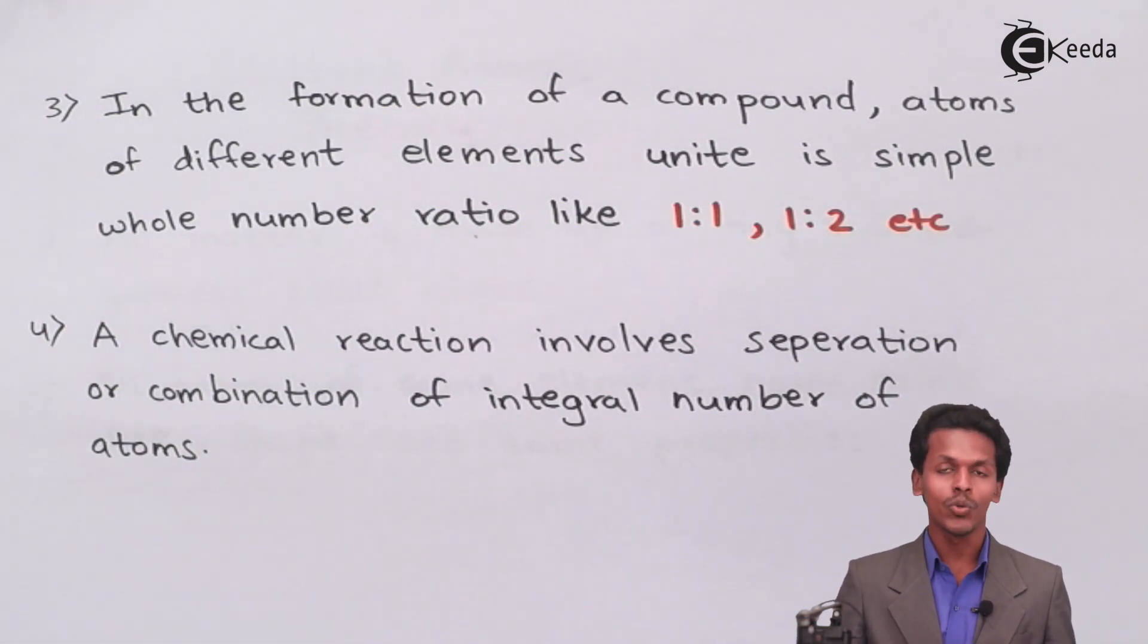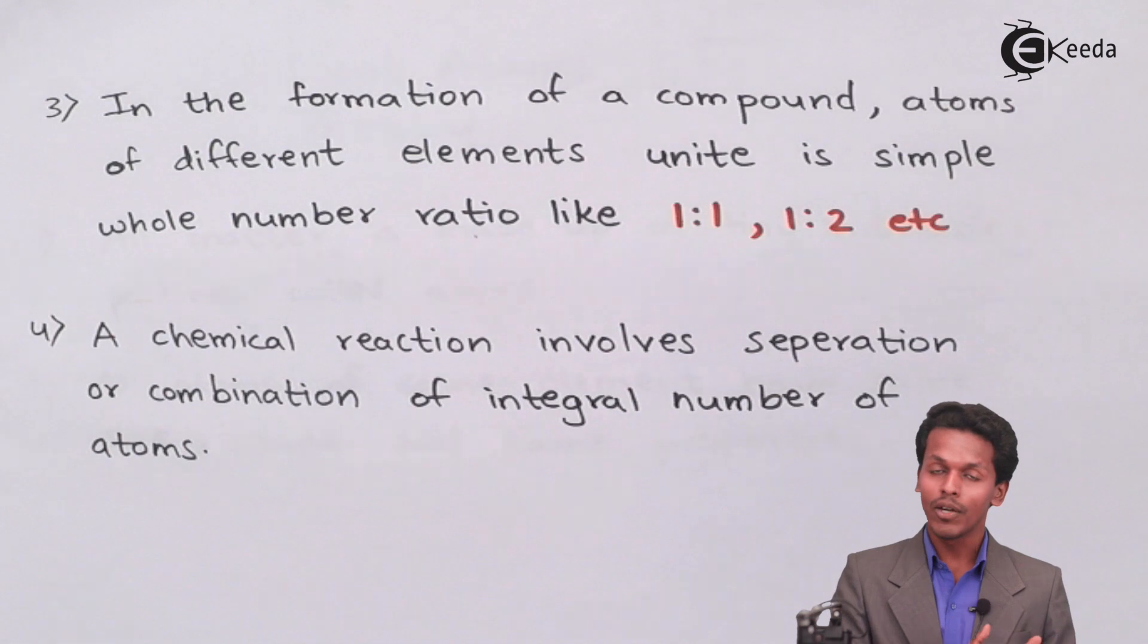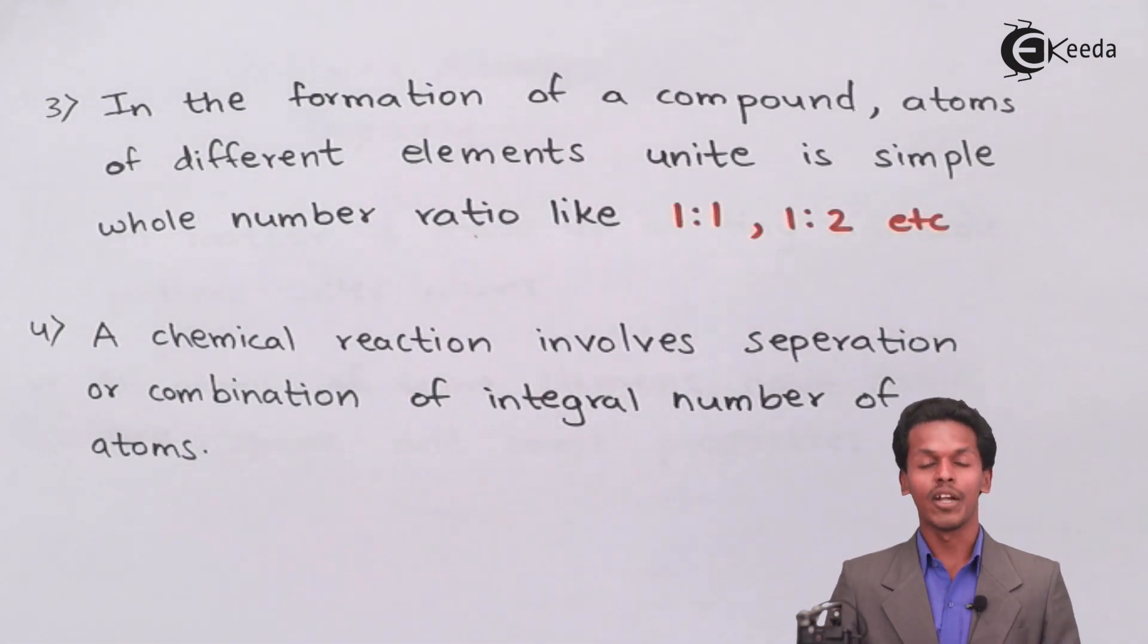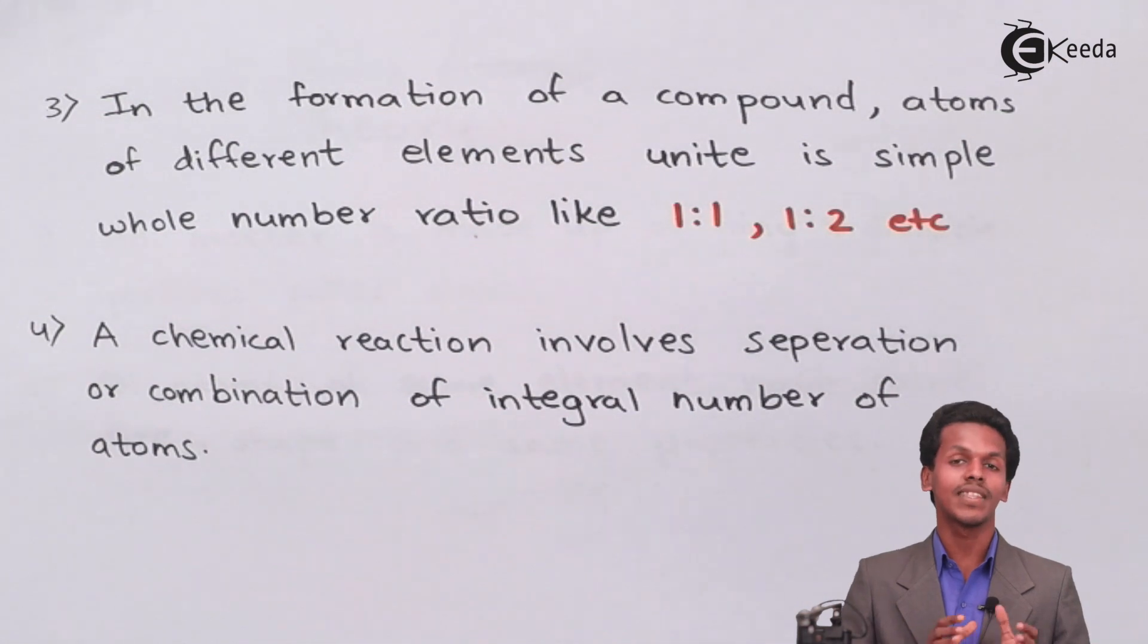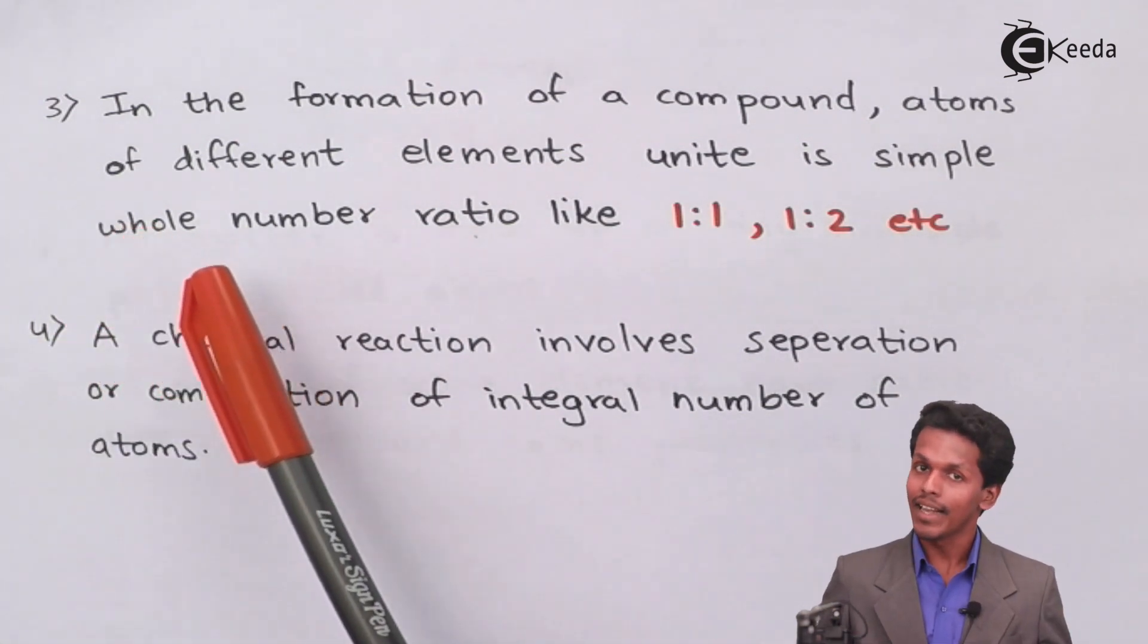So I could make a ratio of hydrogen and oxygen as 2:1 or 1:2. During a chemical combination of these two atoms, they combine in a simple whole number ratio which is being expressed by Dalton's theory.